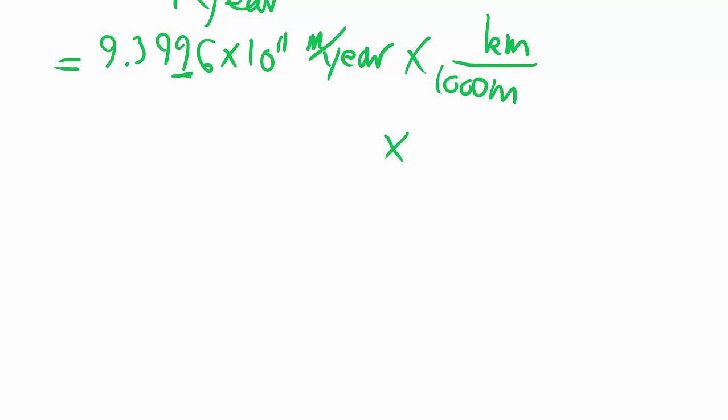To change the year from year to second, it's quite a big leap, so we'll take it step by step. We want to get rid of the year, which is on the bottom, so we put the year on top. Then the next easiest step to go to would be probably days, because we know there are how many days there are in a year, which is 365, but to be more precise, every four years we gain an extra day, so it's roughly 365.25, so 365 and a quarter of a day in any given year.